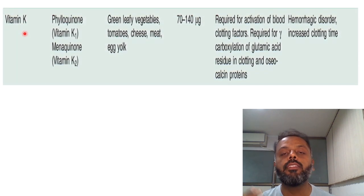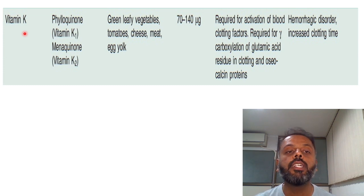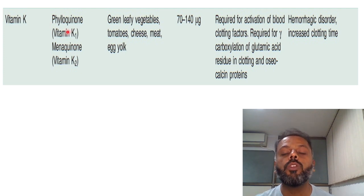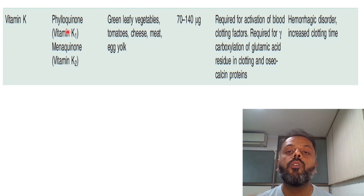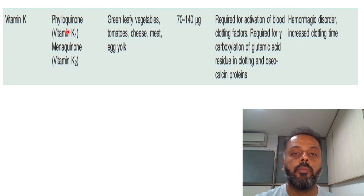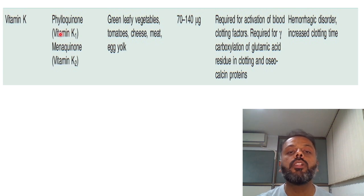The last fat-soluble vitamin is vitamin K. There are various active forms of vitamin K. The first is phylloquinone, which is plant-derived and also known as vitamin K1. The second is menaquinone, which is synthesized in the intestinal gut flora. The third is the synthetic form, menadione, also known as vitamin K3. Sources of vitamin K include green leafy vegetables, cheese, meat, and egg yolk.